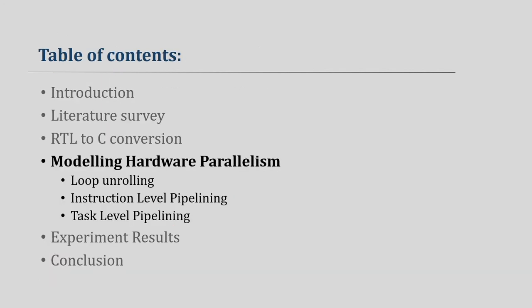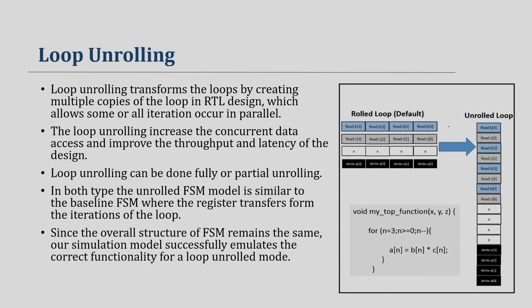The RTL-to-C converter must support all HLS optimizations: loop unrolling, loop pipelining, and task-level pipelining. Loop unrolling converts a loop into a sequence of states — a straightforward sequential code — and does not create much problem; it can be handled by the parser automatically. Loop pipelining, where multiple loop iterations execute in parallel across pipeline stages, creates a single state in the FSM with multiple sub-stages controlled by stage flags. The generated C checks those flags to determine which stage to execute.